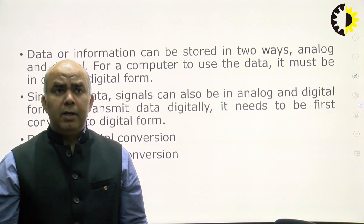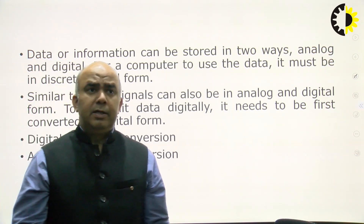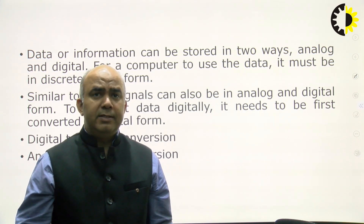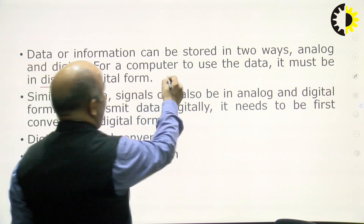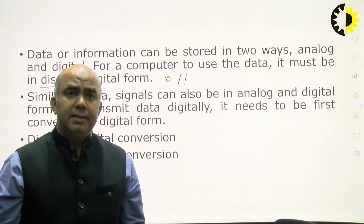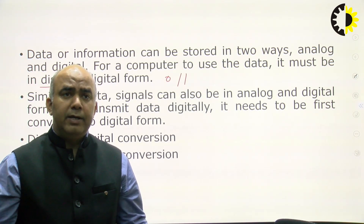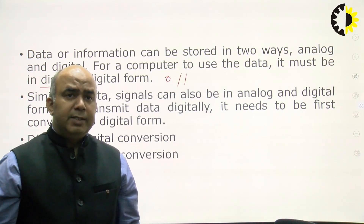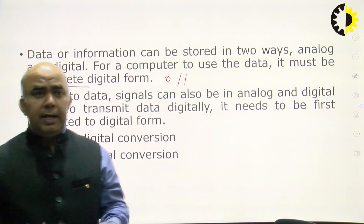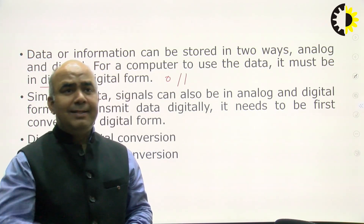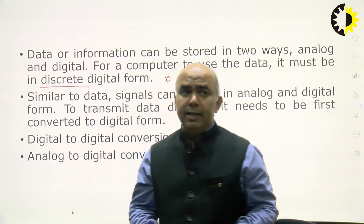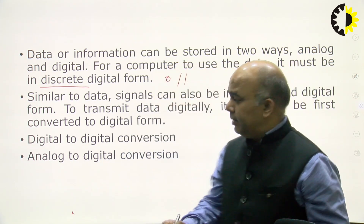If we talk about computers, data has to be in digital format and represented in discrete format, that is 0 and 1. Similarly, signals can also be categorized into analog and digital format during transmission. In computer networks, analog signals have to be converted into digital signals, and then those digital signals are transmitted over the network.